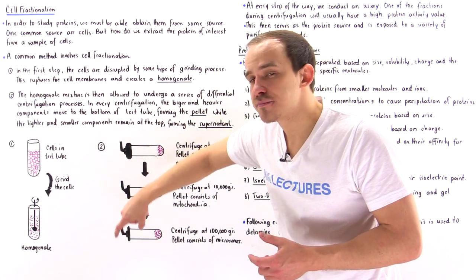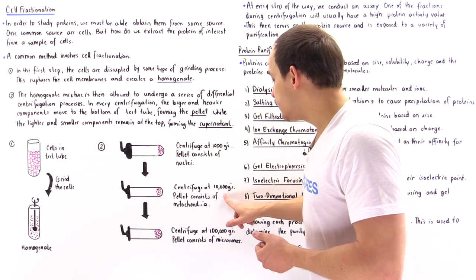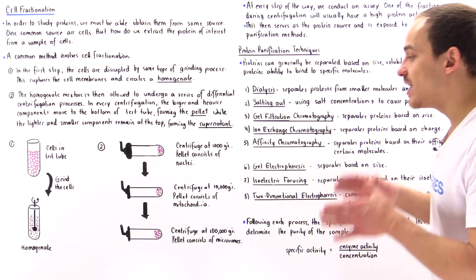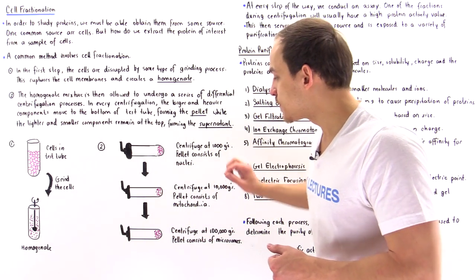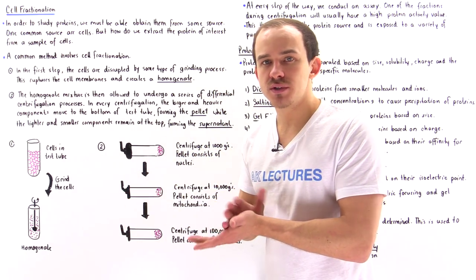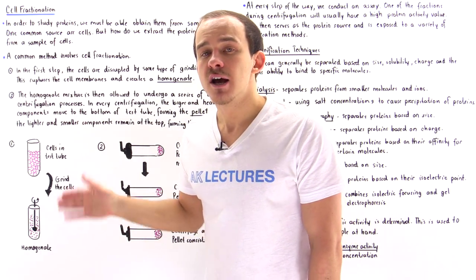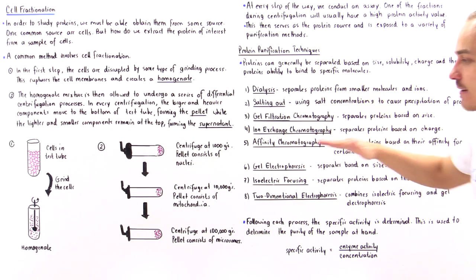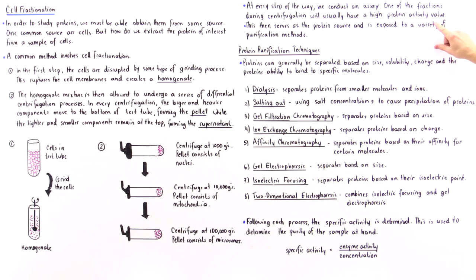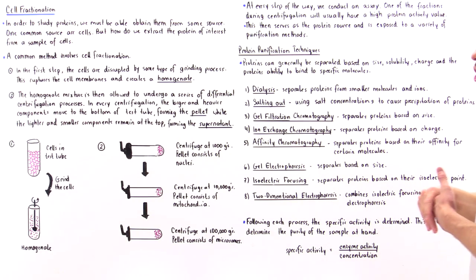We once again remove the pellet, take the supernatant, and expose it to yet another centrifugation process, now increasing the acceleration to 100,000 g's. This creates a pellet that contains very tiny microsomes, and usually inside the supernatant are the proteins that we actually want to use. In every step of this process, we carry out some type of protein assay for the specific protein or enzyme we want to study. Whenever we get the highest value for that protein activity, that's the fraction we actually want to use.